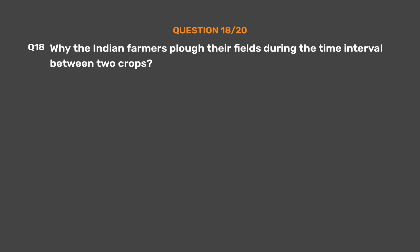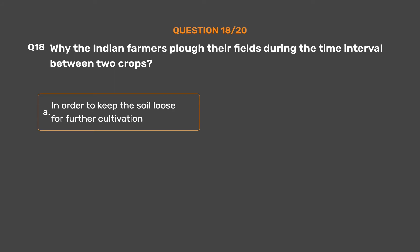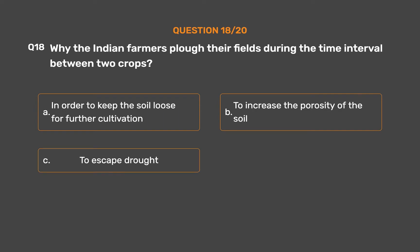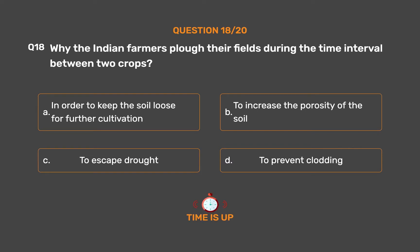Question number 18. Why do Indian farmers plough their fields during the time interval between two crops? Option A: In order to keep the soil loose for further cultivation. Option B: To increase the porosity of the soil. Option C: To escape drought. Option D: To prevent clodding. The correct answer is Option D, to prevent clodding.